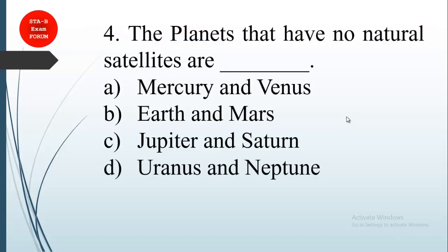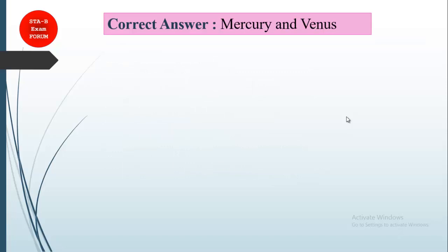Coming to the next question: the planets which have no satellites. Option B is eliminated because we know Earth has its natural satellite, the moon. You also must know that Jupiter has some satellites like Ganymede, Europa, and Callisto. Uranus and Neptune have a large number of satellites. The correct answer is option A, Mercury and Venus. This is because these planets are very close to the sun, so no satellite is able to survive in those extreme conditions.